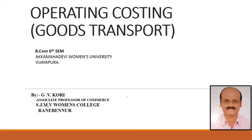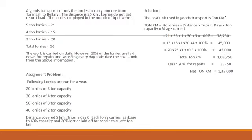Dear students, today we shall discuss operating costing relating to goods transport undertakings. We shall see problems based on goods transport. The difference between goods transport and passenger transport is that in passenger transport we take into consideration passengers carried, but in goods transport we should take into consideration tons carried or load carried. That is the only difference; the rest of the things are the same.